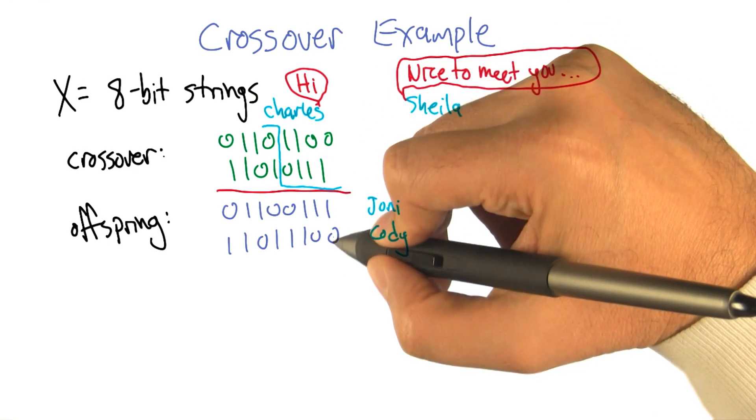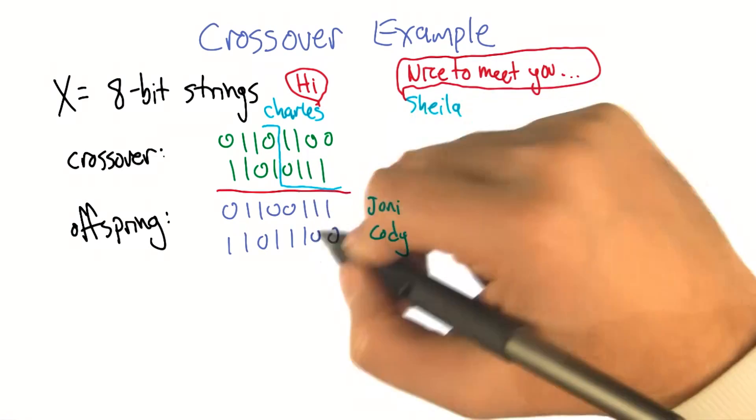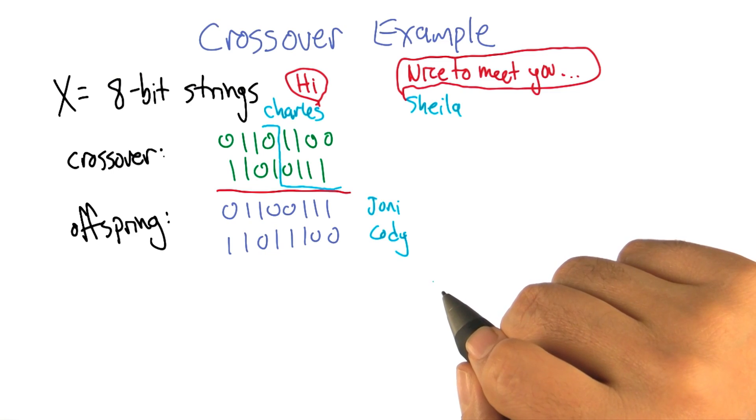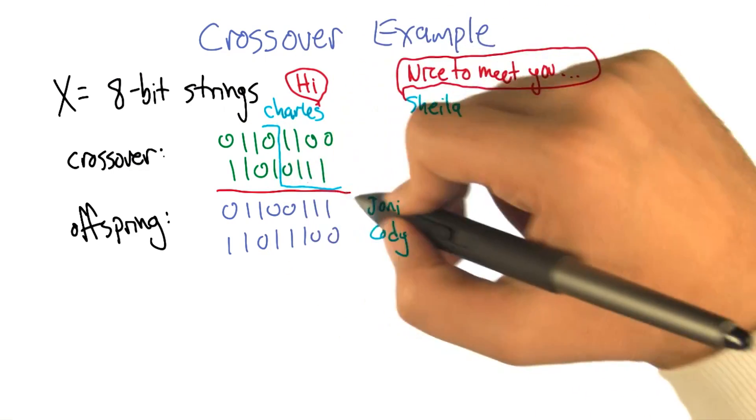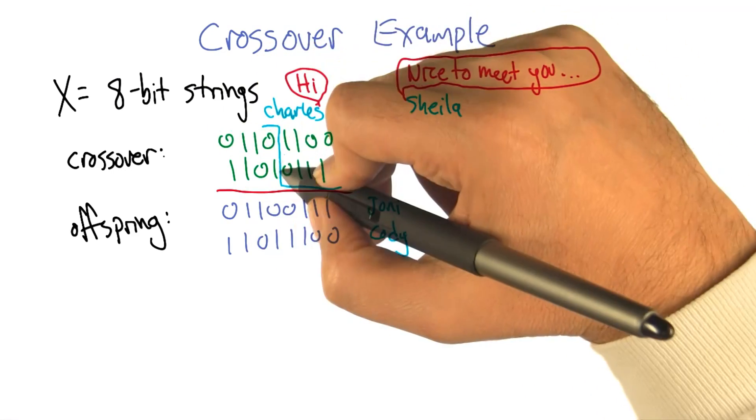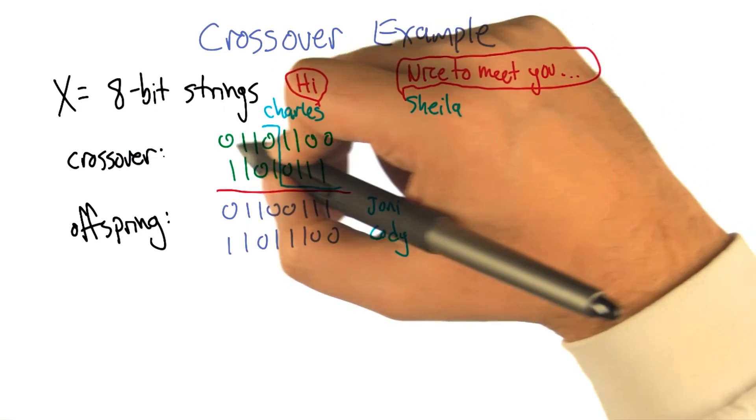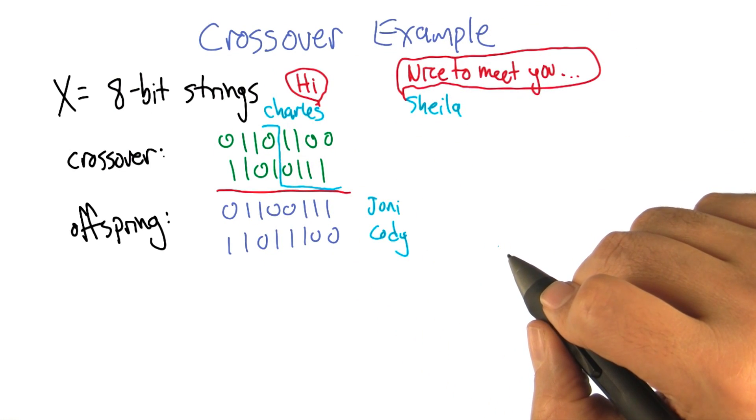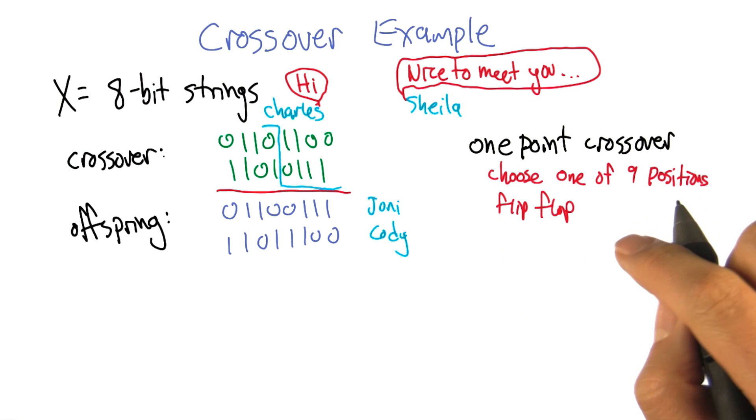And as you can see, it's this last bit that determines the sex. Anyway, so these are the two offspring that these two individuals have generated. And this particular way of combining, where you randomly choose a position, and then flip flop, is called one point crossover.